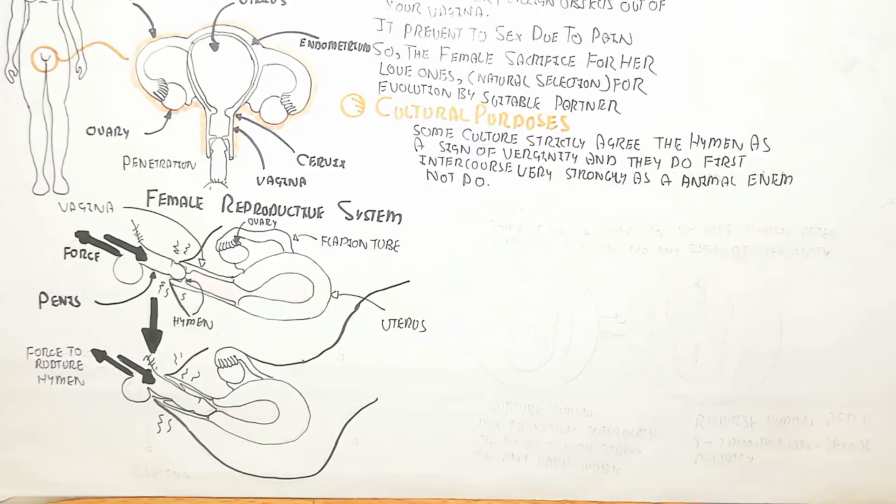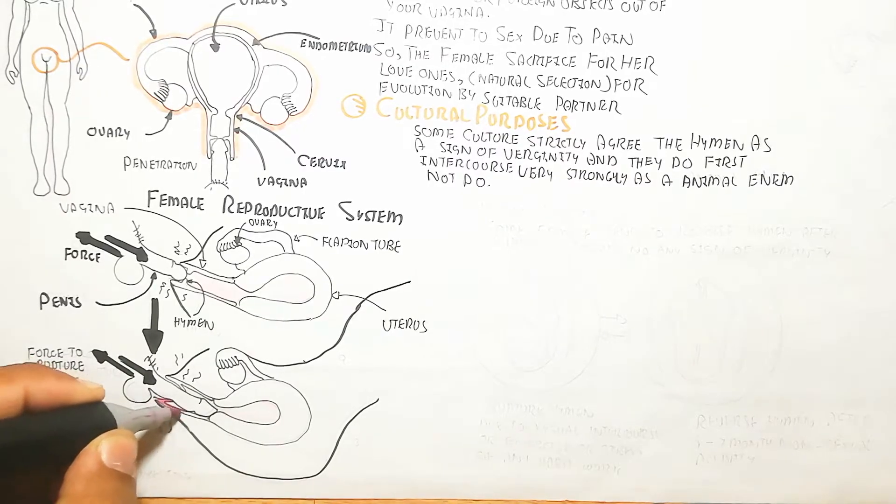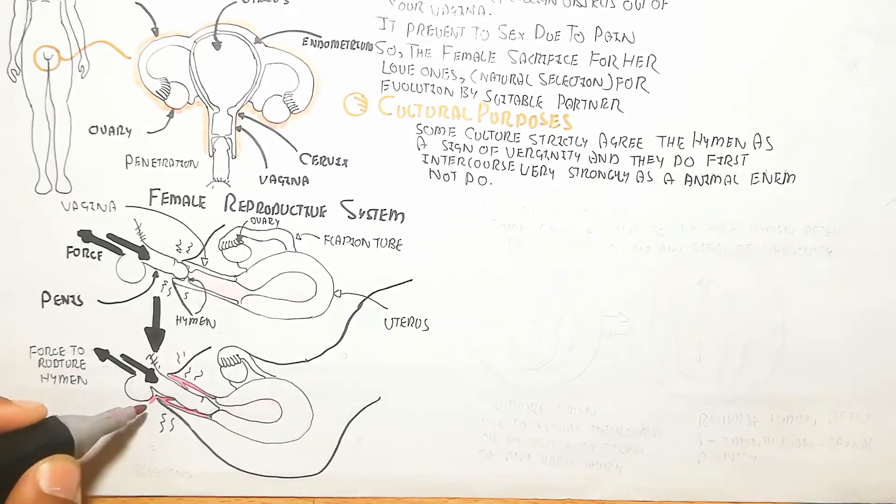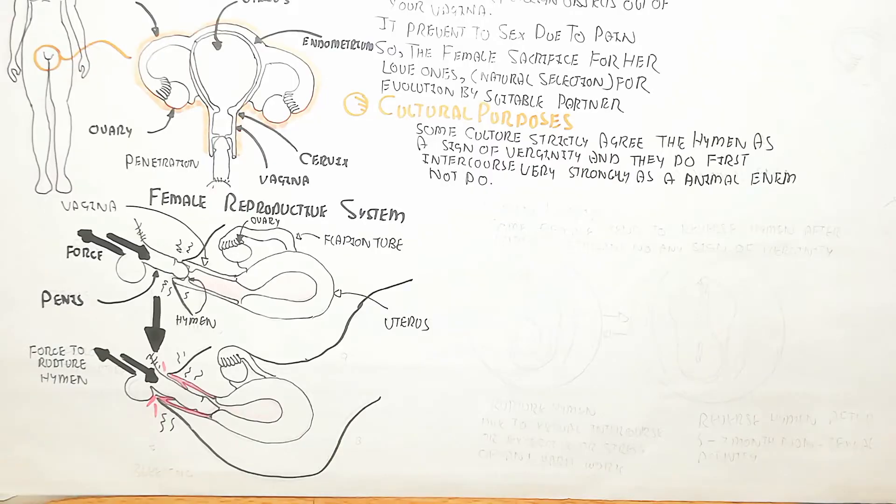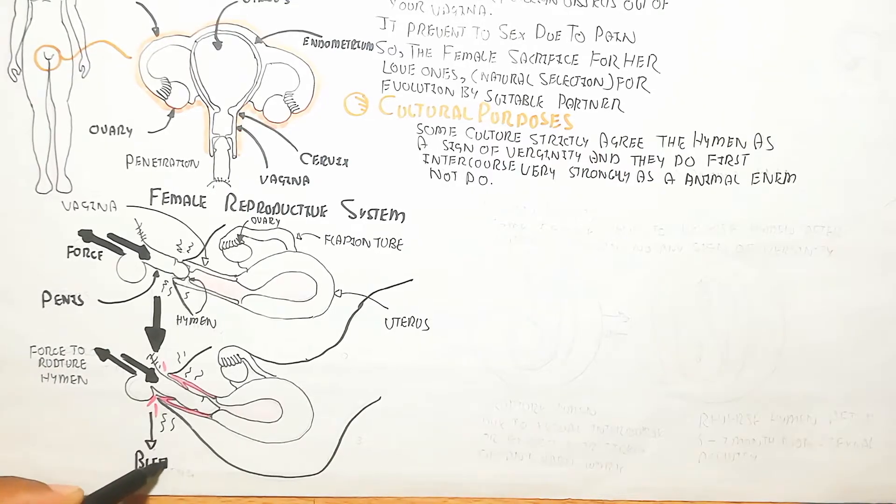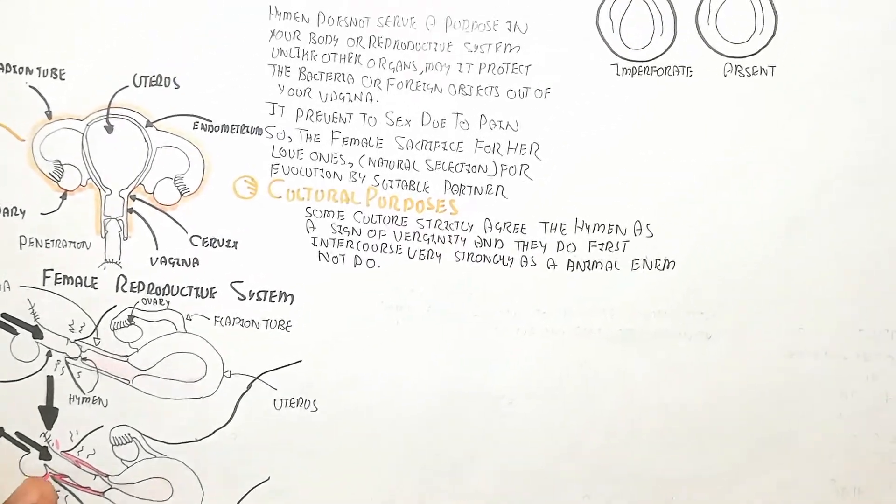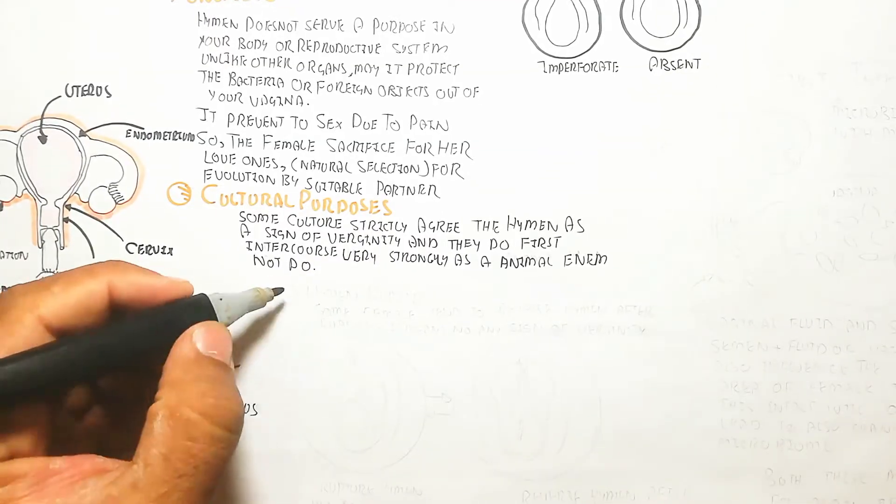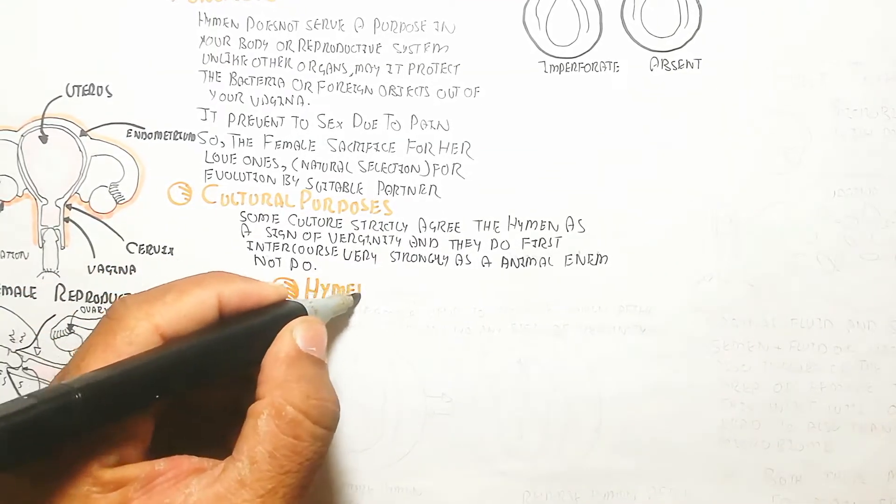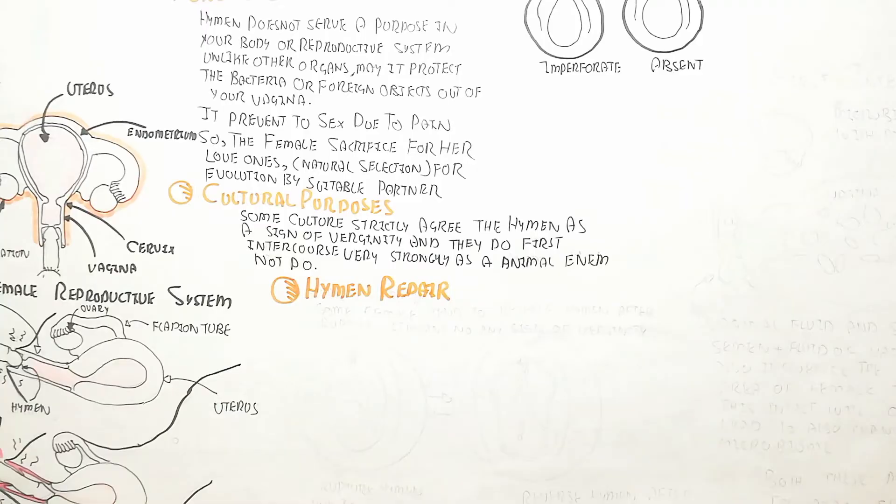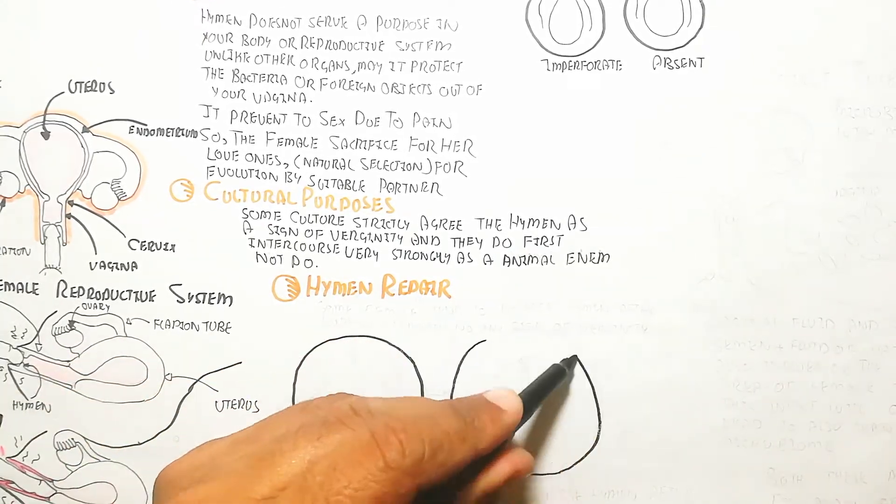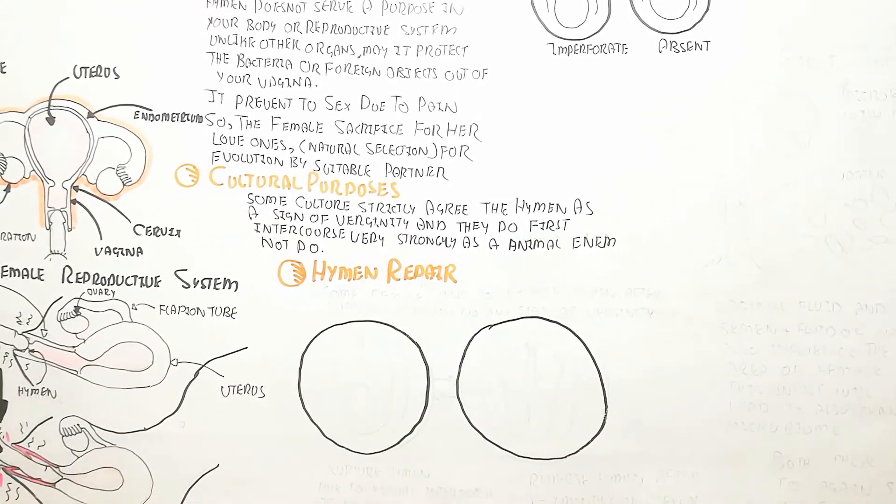Remember that pain is due to stretching of the vaginal wall, which leads to red color showing and causes bleeding. The force to rupture the hymen through penis is known as penile virginity loss.